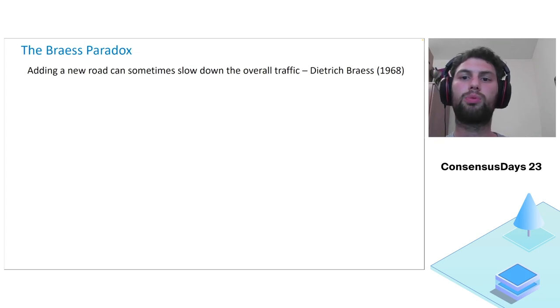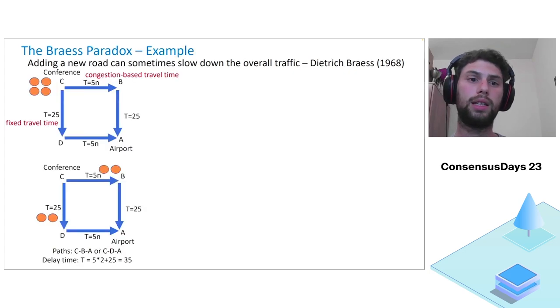After giving a short brief on payment channel networks, we will now present Braess's Paradox on traffic networks. In 1968, Braess showed that sometimes adding a new road can actually slow down the overall traffic. This is very unintuitive, since allegedly no driver is forced to use the new road. Hence, adding a new road only increases the number of options each driver has, and it should not decrease the overall performance. Let's see a simple example.